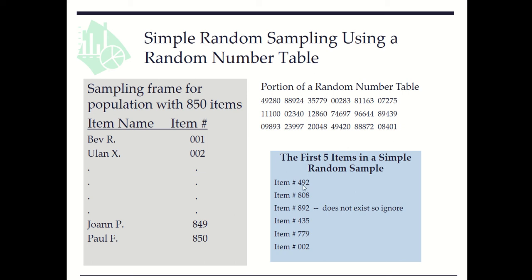The first one, 492. We can pick 492. The second, 808. The third, be careful, 892 is too big, so we don't use it. We go with the next 435, 779, and 2. So we obtained 5 items from the sampling frame. Here we use the simple random sampling method.